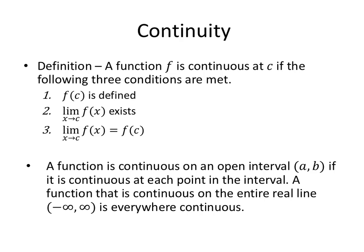That's very important. So that's continuous at a value c. A function is continuous on an open interval if it is continuous at each point in the interval. A function that is continuous on the entire real line is called everywhere continuous, and we'll see several of those functions in this lecture.